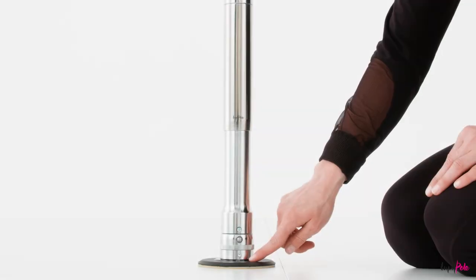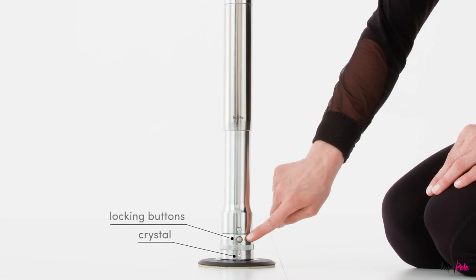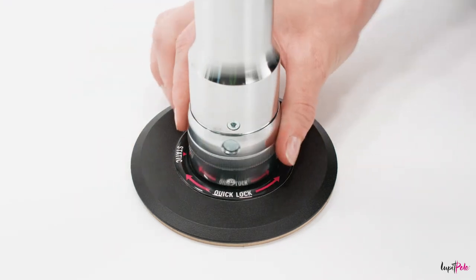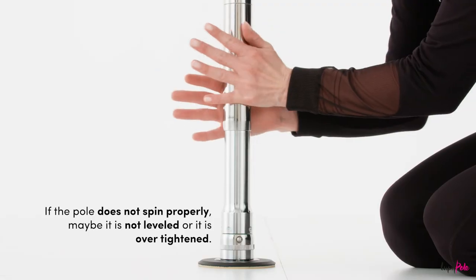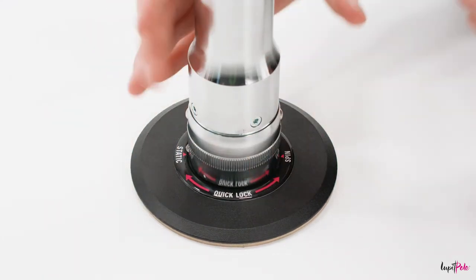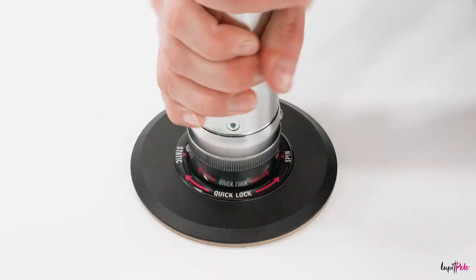There are two systems available to switch your pole from static to spin. Squeeze both locking buttons at the same time and twist the lock to the spin position. Return to the static position, repeating the whole process in the opposite direction.